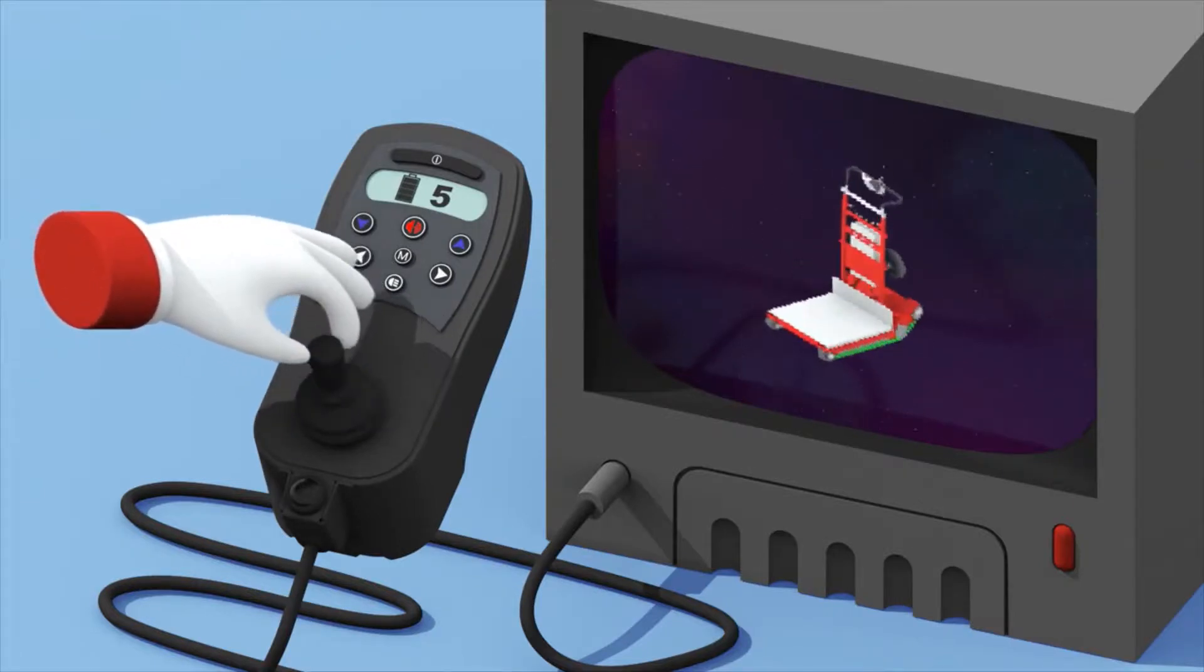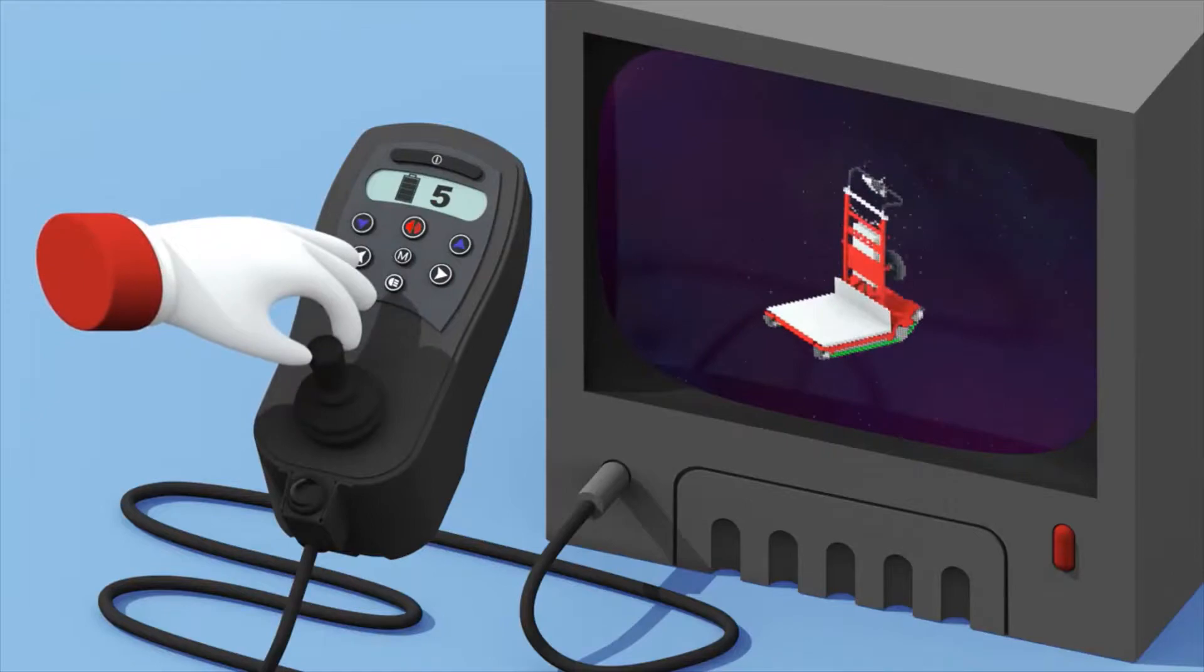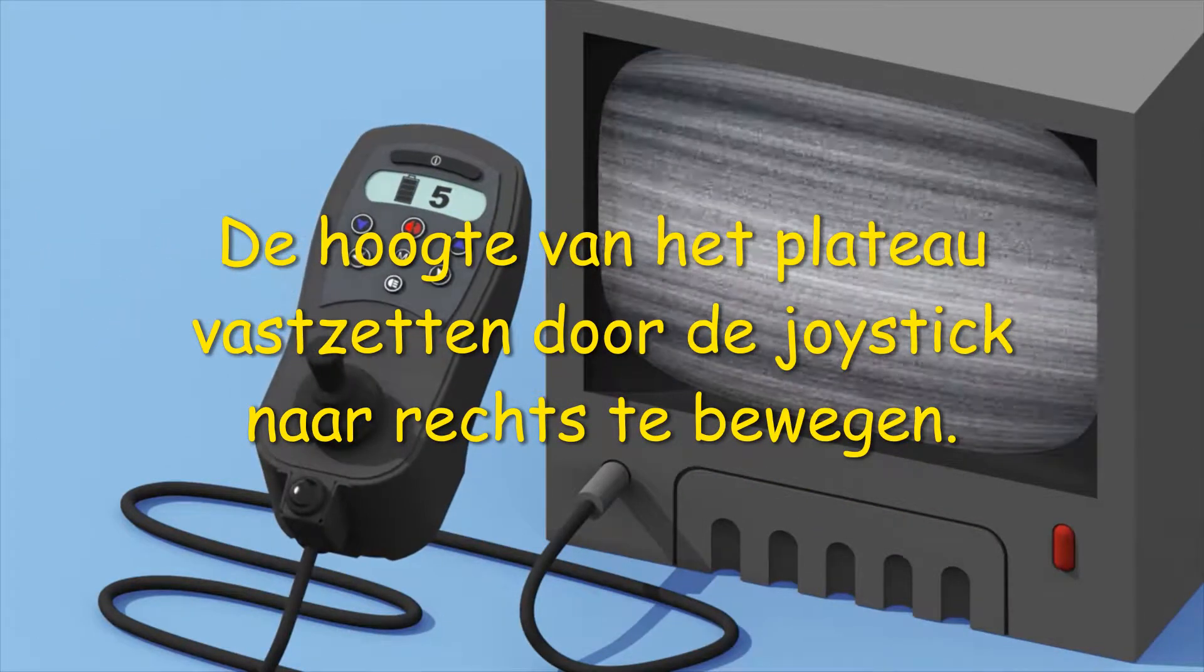Move with the joystick. Tilt the platform in the most convenient position for you with the M button. And exit the M function by tapping the joystick to the right.